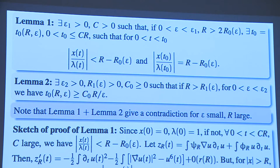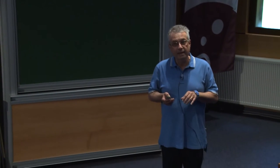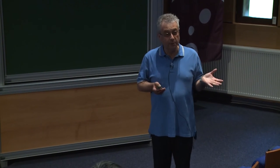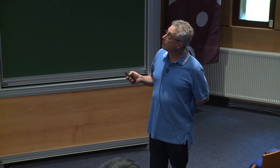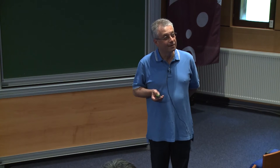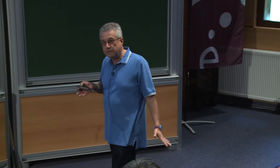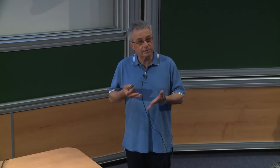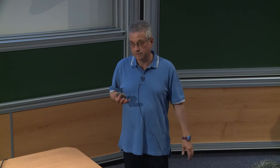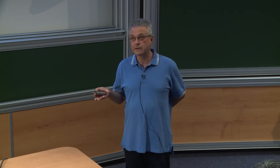If we were dealing with the radial case, then x of t would always be 0 and this already gives a contradiction. But we're not in the radial case, so we have to do one extra thing, and that extra thing has to involve the momentum — because the momentum of any radial function is zero. You take a pair of radial functions, multiply the gradient of one times the other, and you get zero.